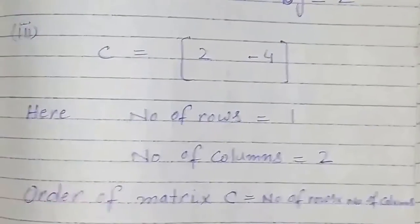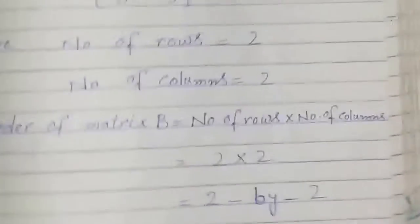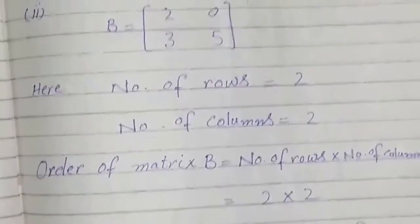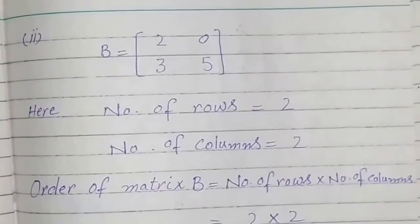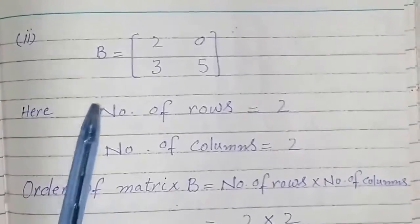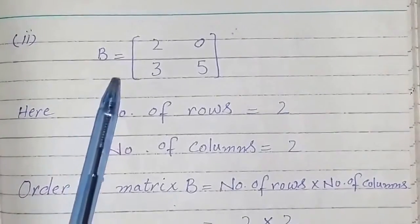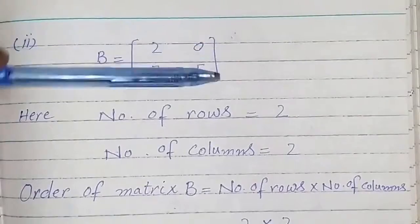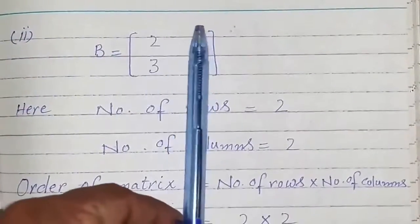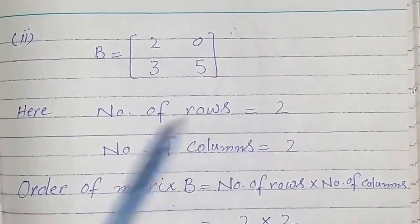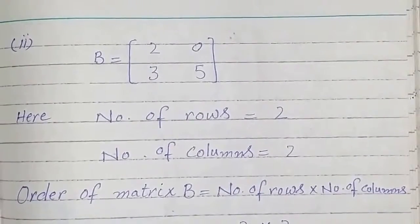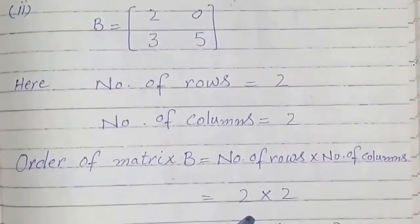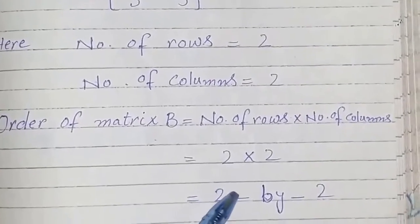The same is the case with matrix B. Matrix B also has 2 rows and 2 columns, so the number of columns equals 2. Therefore the order of matrix B is also 2 by 2, that is 2 times 2.